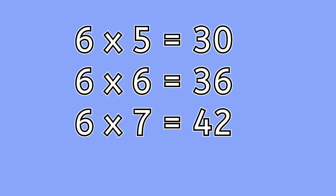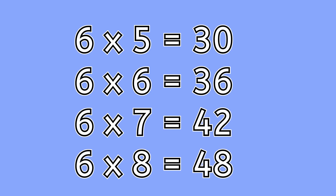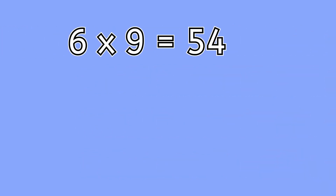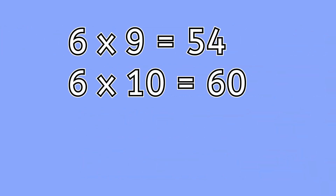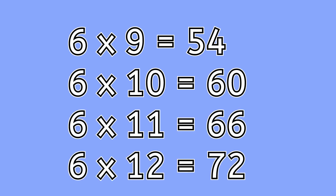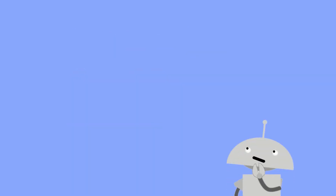6 times 5 is 30. 6 times 6 is 36. 6 times 7 is 42. 6 times 8 is 48. 6 times 9 is 54. 6 times 10 is 60. 6 times 11 is 66. 6 times 12 is 72. Let's multiply and divide with 6.